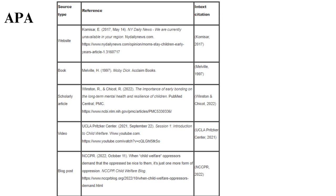The title page should have the title in bold and title case. A few spaces after the title, write your name, department, course, professor's name, and date. These should all be centered. Organize references in alphabetical order starting with author surnames, or source title if it has no listed name. On the last page, list your references with the title References.